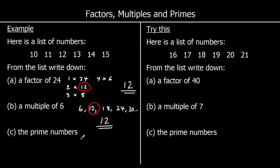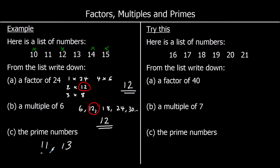A prime number has exactly two factors: 1 and itself. Checking the list: 10 is 1×10 and 2×5, so it's not prime. 11 is only 1×11, so 11 is prime. 12 is divisible by 2 and 3, so not prime. 13 is only 1×13, so it's prime. 14 is 2×7 and 15 is 3×5, so neither is prime. The prime numbers are 11 and 13.